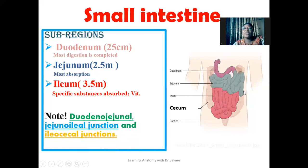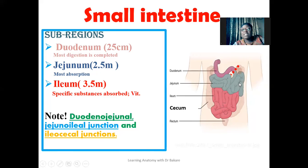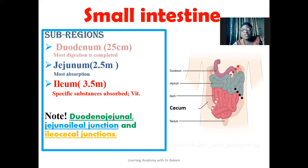There are distinct junctions within the small intestine worth highlighting. At the point where the duodenum unites with the jejunum, this is called the duodenojejunal junction. This is followed by the jejunoileal junction, where the jejunum connects with the ileum. The last junction is the ileocecal junction, where the ileum connects with the cecum — the first region of the large intestine. Breaking down these composite names reveals the specific regions that are connected.